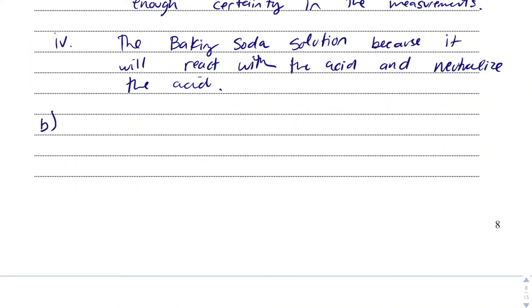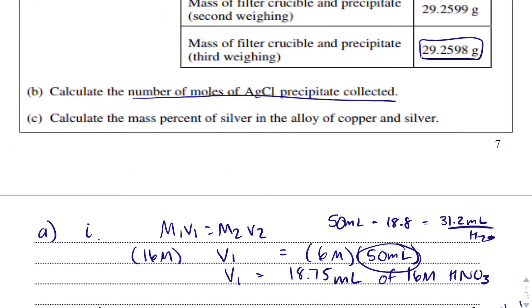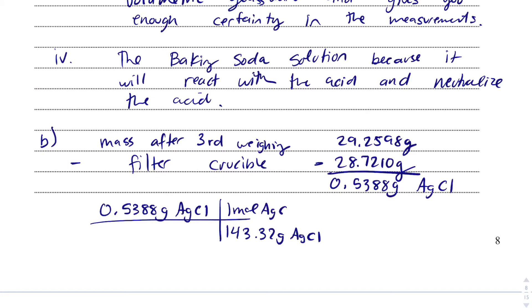I'm going to take the mass after third weigh, which was 29.2598 grams, and I'm going to subtract the filter crucible, 28.7210 grams. I get 0.5388 grams of silver chloride. But I believe they asked for moles, so I'll just have to go one step further. 0.5388 grams of AgCl. There are 143.32 grams of AgCl for every one mole of AgCl. I never expect to get a lot of moles, but I get 3.759 times 10 to the minus third moles of AgCl.